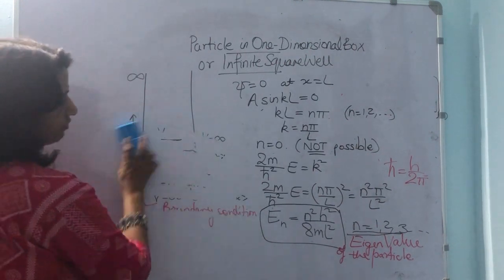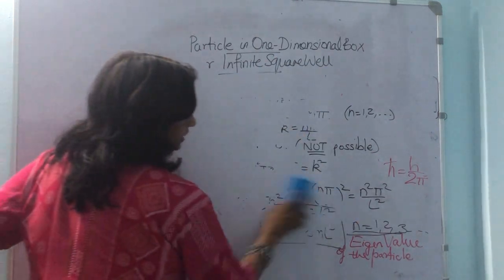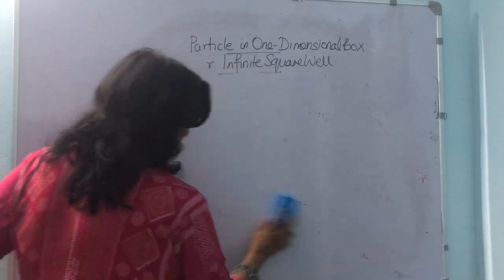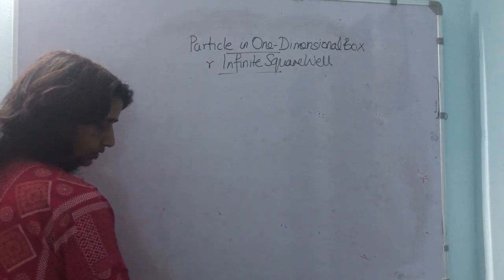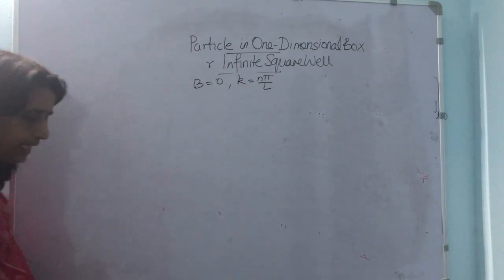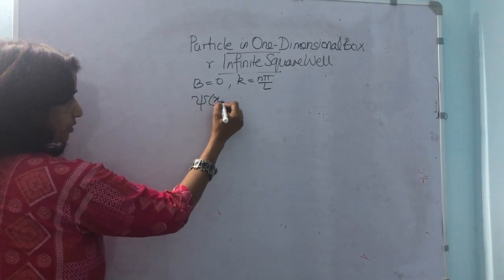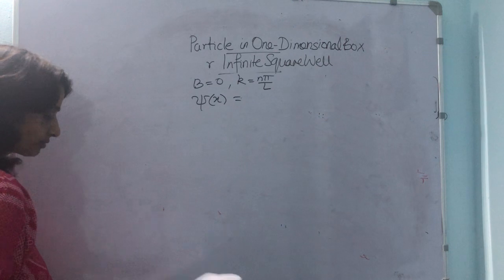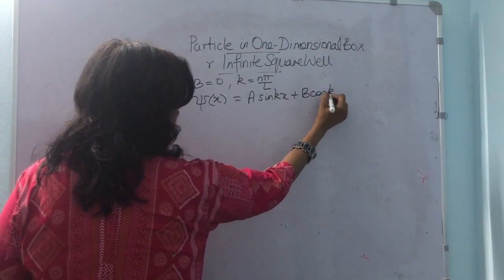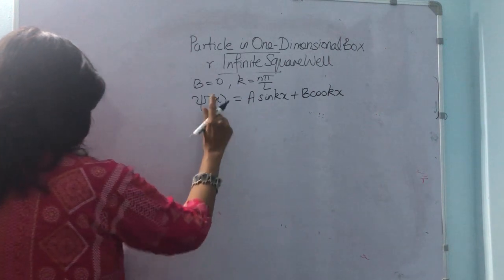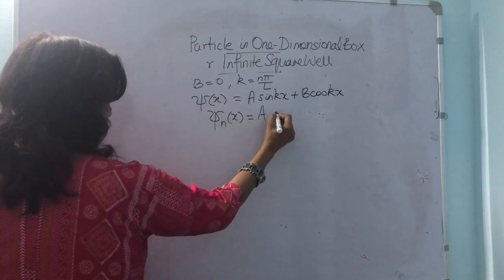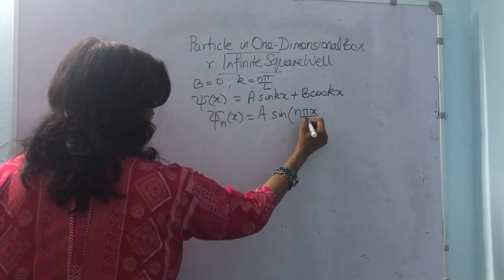To find the eigenfunctions, we evaluate constant A. With B equal to 0 and k equal to nπ/L substituted into the wave equation φ(x) equal to A sin(kx) plus B cos(kx), the permitted solutions become φₙ(x) equal to A sin(nπx/L). To find A, we use the normalization condition of the wave function.